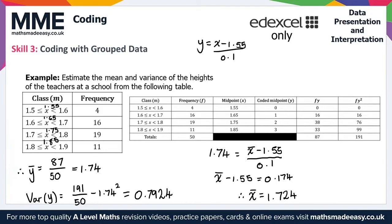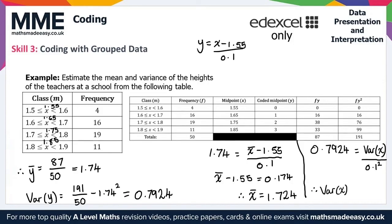For the variance of x, using 0.7924 equals Var(x) over 0.1 squared, we solve for Var(x) to get 0.00792. That gives us the solution to our example and everything needed for Skill 3 on coding with grouped data, concluding this Maths Made Easy video on coding.